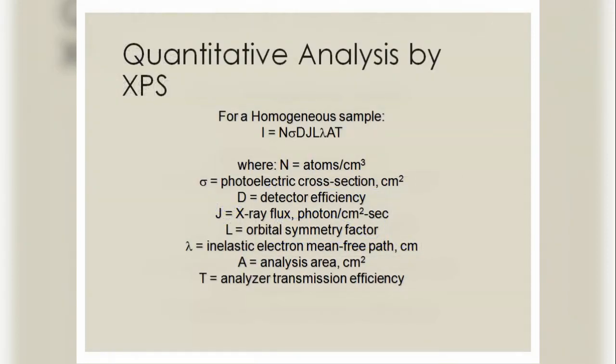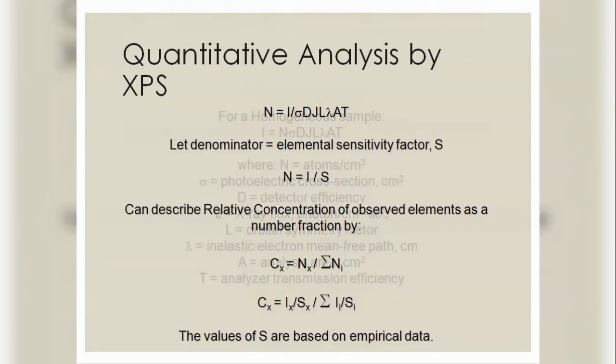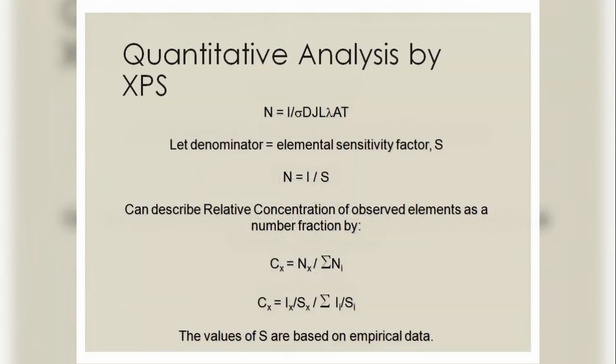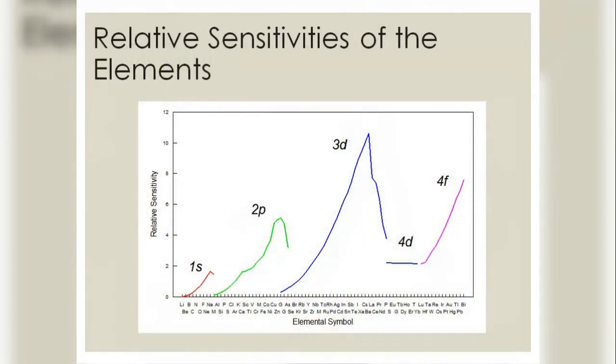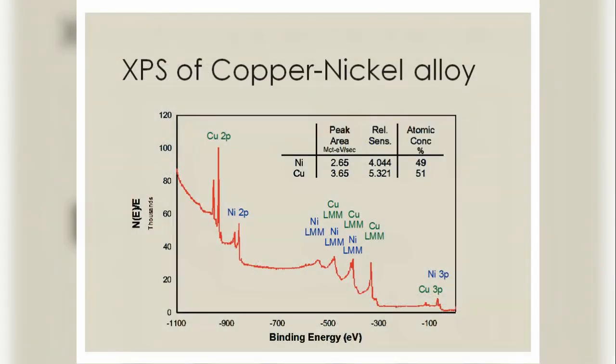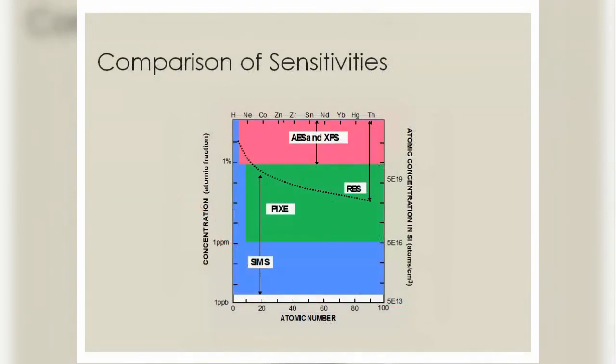The qualitative analysis of XPS. For a homogeneous sample, I = N × σ × D × J × L × λ × A × T. Quantitative analysis of XPS: N = 1/σ × D × J × L × λ, which determines the relative sensitivity of elements. Comparison of sensitivity is shown for XPS of copper-nickel alloy.